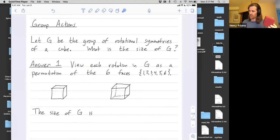We're going to view each rotation in this rotational group of symmetries as a permutation. We're going to think of a rotation as permuting the six faces. So let's give names to these faces: 1, 2, 3. Faces 4, 5, and 6 are hidden right now.